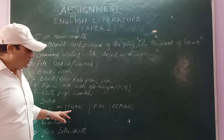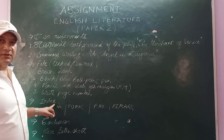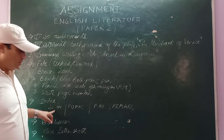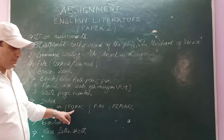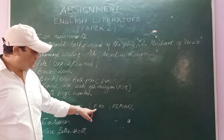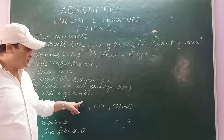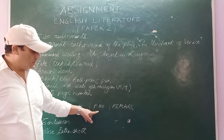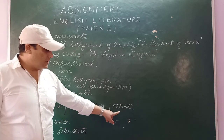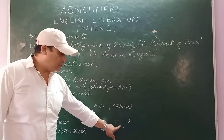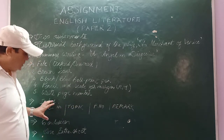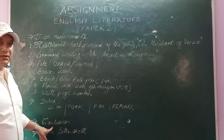On the second page, prepare an index of four columns: serial number, topic (what you write in your assignment), page number (from where to where the topic is written), and remark — just make a remark column and leave it blank, nothing to be written there.